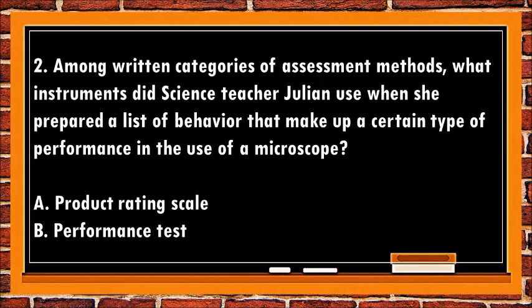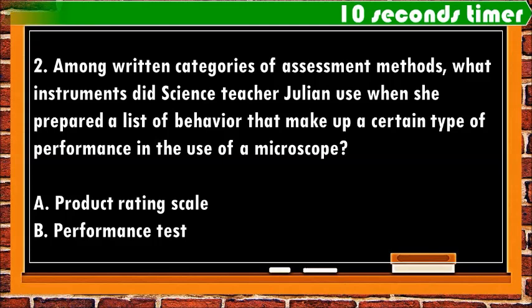2. Among written categories of assessment methods, what instruments did science teacher Julian use when she prepared a list of behavior that make up a certain type of performance in the use of a microscope? a. Product Rating Scale. b. Performance Test.